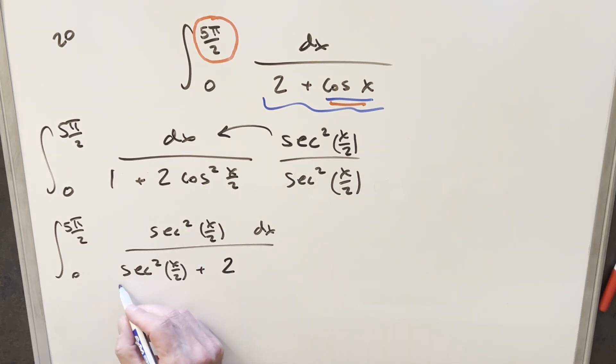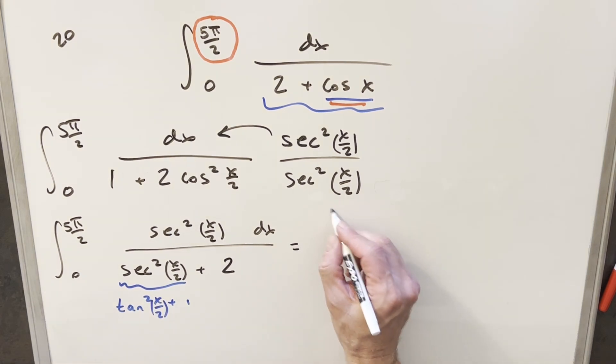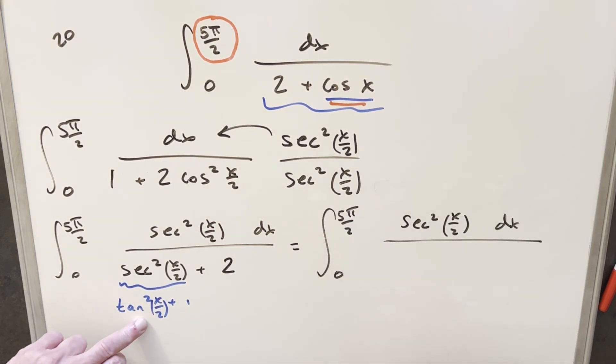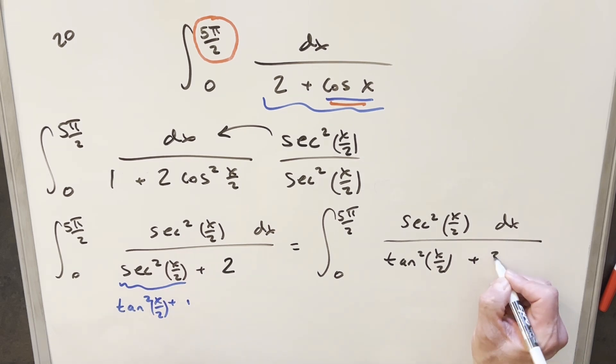But then now at this point on secant squared, I can use the identity here. I can use the identity tan squared plus 1 for secant squared. We'll just have that angle the same, x over 2. So when I put this together and rewrite again, but now we'll take this one and put this into the denominator. So we're going to have this tan squared x over 2, we'll have plus 1 plus 2, so we're going to have a plus 3 over here.